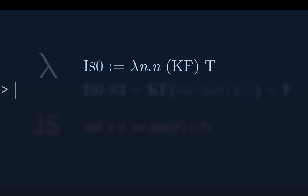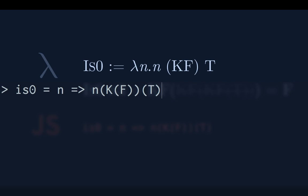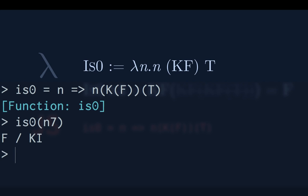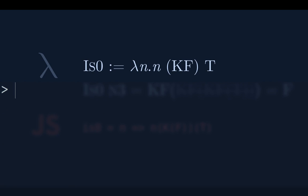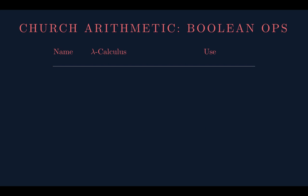Let's define is0: it takes a church numeral, applies the church numeral to the constant-false function and to true. Checking if n7 is zero — it's not. One is also not. But zero is. We've got our first merging of booleans and arithmetic — a multitype function that takes in a number and gives back a boolean.